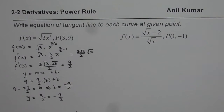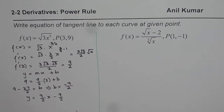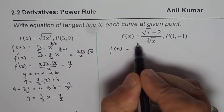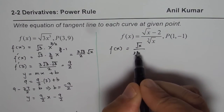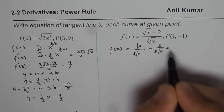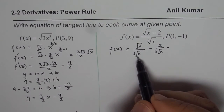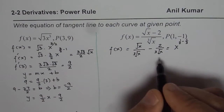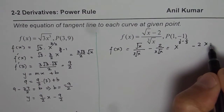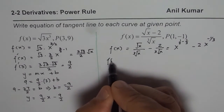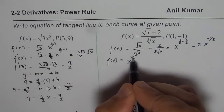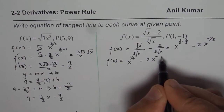Follow these steps and find the equation of the tangent line for the second function. You can pause the video, try it, and then look at my suggestions. Let's begin by simplifying the fraction. We can write it as √x over ∛x minus 2 over ∛x. Now this is x to the power of 1/2 minus x to the power of 1/3 for the first term. In exponent form: x to the power of (1/2 - 1/3), which is 1/6, minus 2 times x to the power of -1/3.